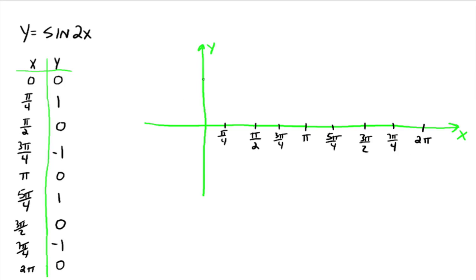Alright, so we're going between 1 and negative 1 again. So 0, pi over 4, we're up here at 1. At pi over 2, we're at 0. At 3 pi over 4, we're at negative 1. At pi, we're at 0. At 5 pi over 4, we're up here at 1 again. At 3 pi over 2, we're at 0. At 7 pi over 4, we're at negative 1. At 2 pi, we're back to 0.